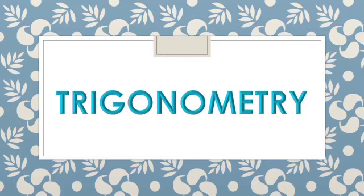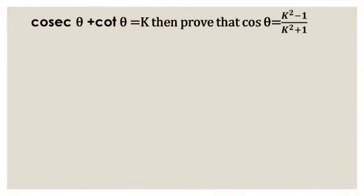Dear children, today we will solve a problem in trigonometry class 10th. Question: cosecant theta plus cot theta is equal to k. Then prove that cos theta is equal to k squared minus 1 by k squared plus 1.